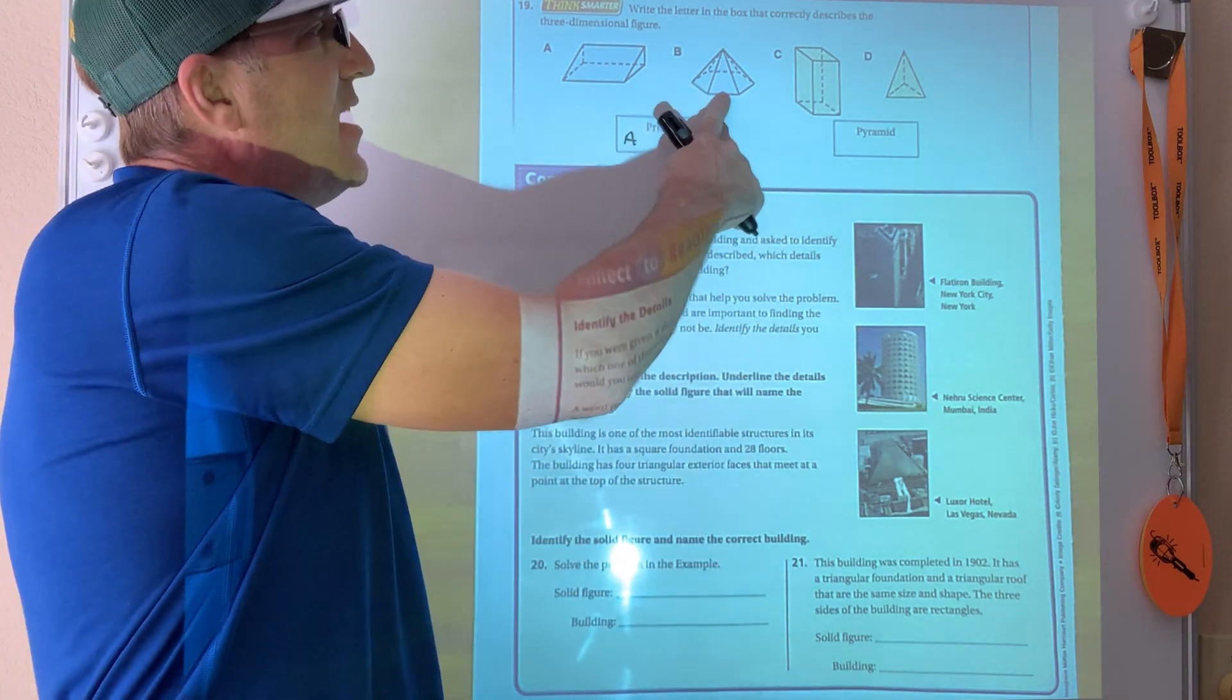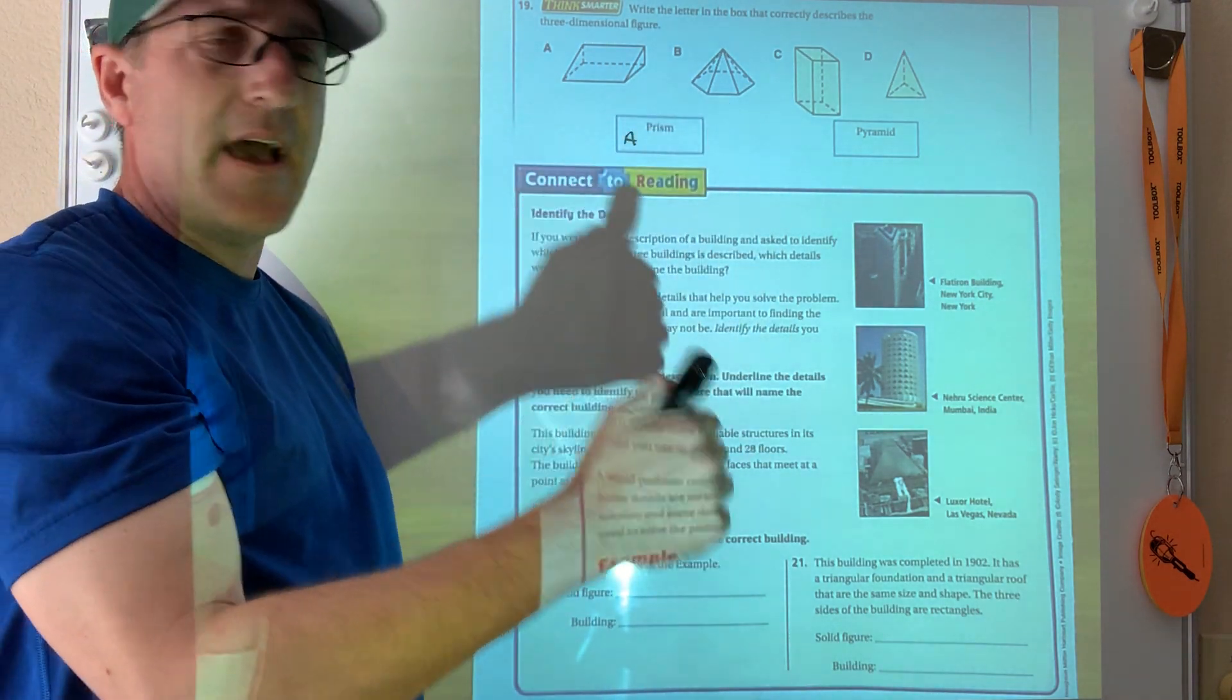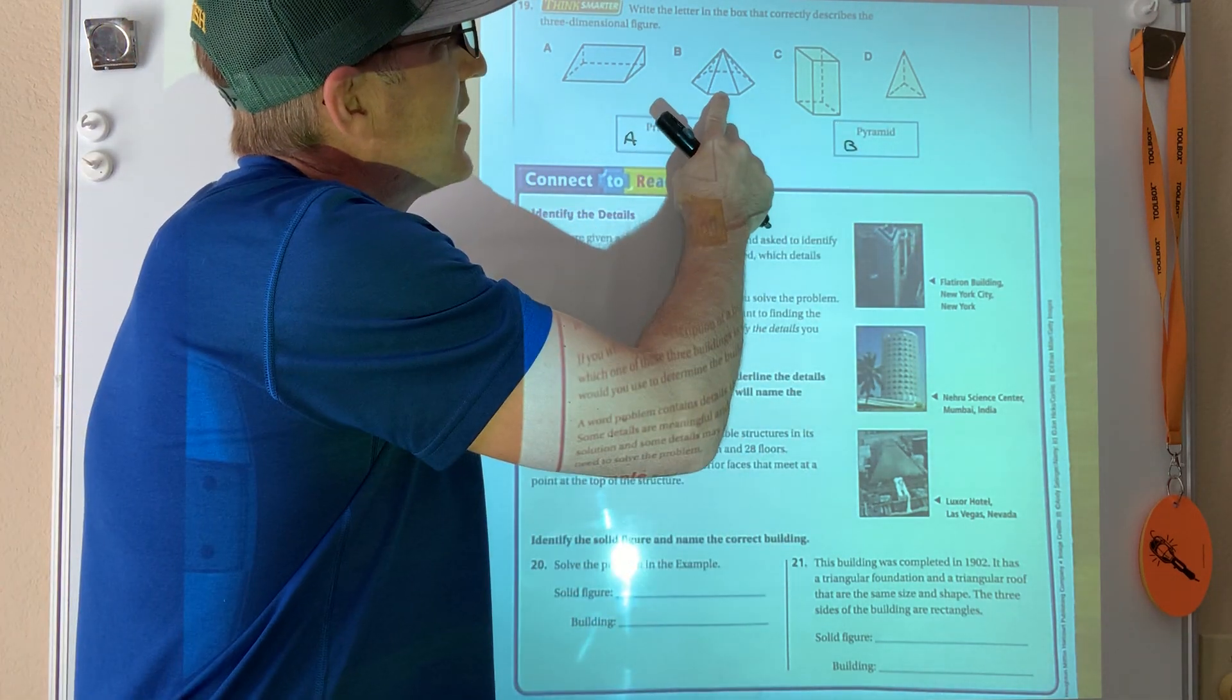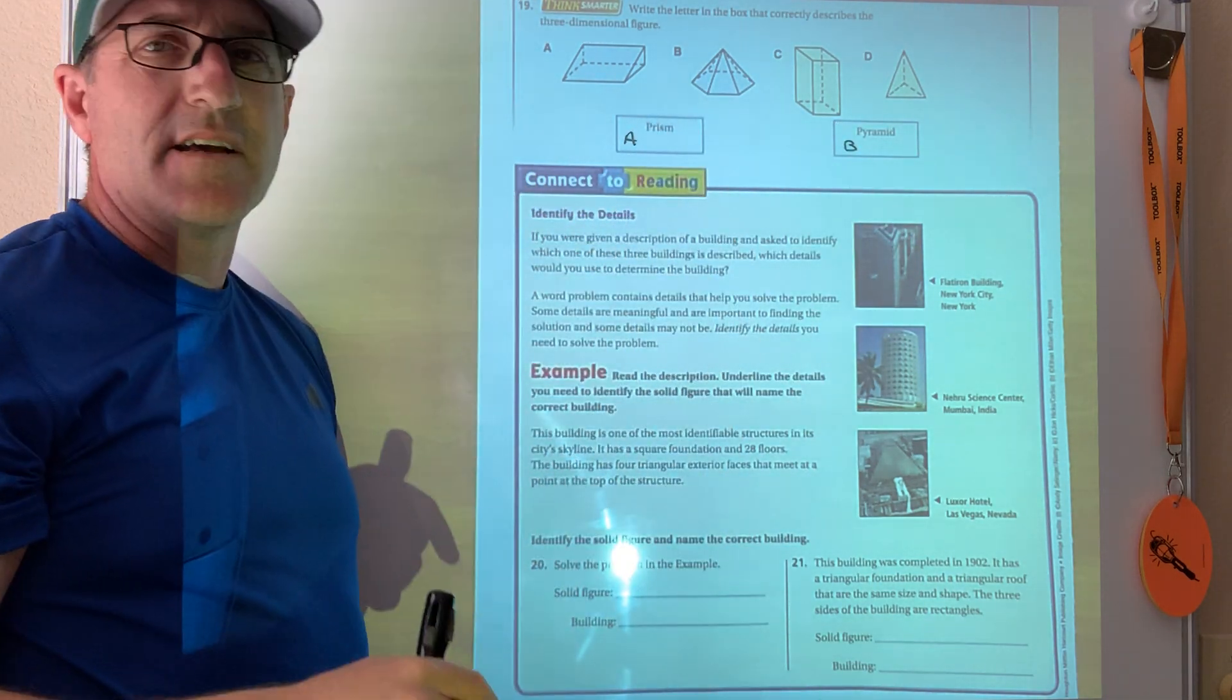How about B? Does it come to a point? Yep. Okay, and if I count the sides it looks like there's six of them. That would be a hexagonal pyramid.